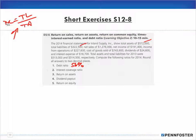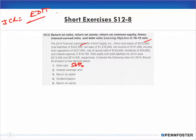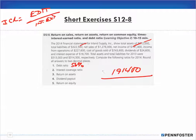The interest coverage ratio is equal to earnings before interest and taxes over interest expense. What is my earnings before interest and taxes? I have net income — but wait, net income is my earnings less my expenses. Income from operations is not the same thing. My net income is income less my expenses, so I initially considered using 191,400 over my interest expense.